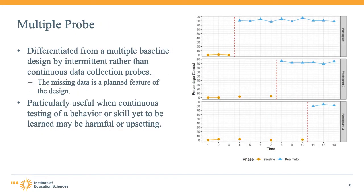The multiple probe design is a variation of the multiple baseline design. It is differentiated from the multiple baseline design by intermittent rather than continuous data collection probes. It is important to note that the intermittent data collection in a multiple probe is a planned feature of the design. Missing data sometimes happens in any single case design due to classroom absences or other uncontrollable factors. However, the presence of a few points of missing data does not make a multiple baseline design a multiple probe design.